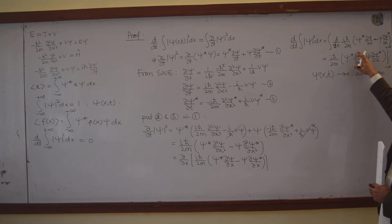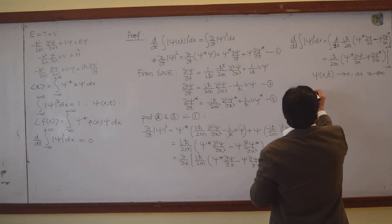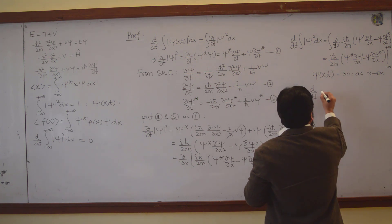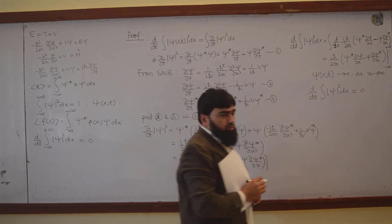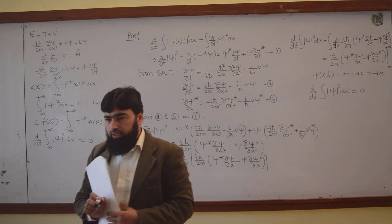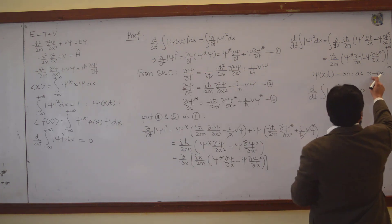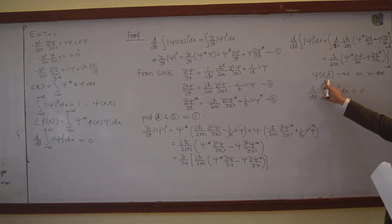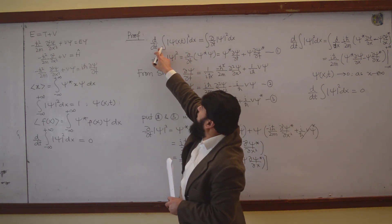If this wave function is a normalized wave function, this means that at x equals plus and minus infinity my wave function should go to zero. And this means that d/dt of ∫|ψ|² dx will be zero, because my wave function is not defined at those boundary points. Otherwise, if this is not true, then my wave function is not normalized. I assumed earlier that my wave function is normalized and it will stay normalized for infinite time.